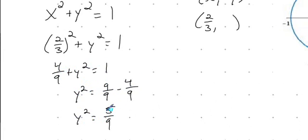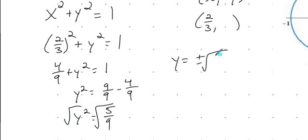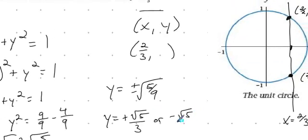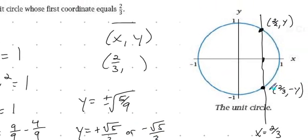We need to find y, so we take the square root of both sides. Taking the square root of both sides gives us plus or minus the square root of five-ninths, which comes out to plus the square root of five over three, or negative the square root of five over three. Those are our two y values: negative square root of five over three for the lower point, and positive square root of five over three for the upper point.